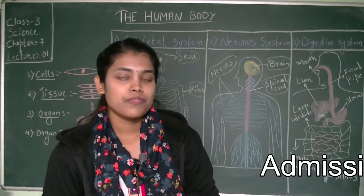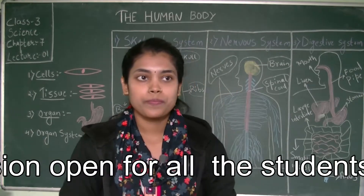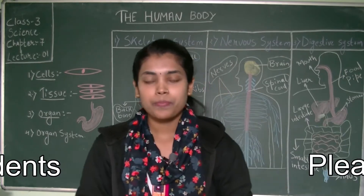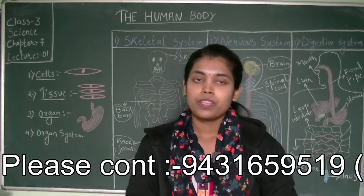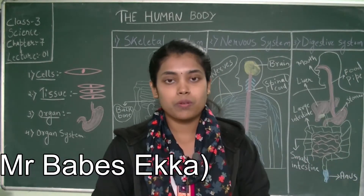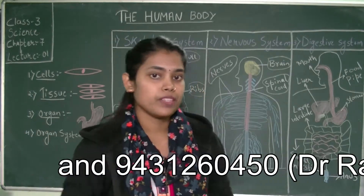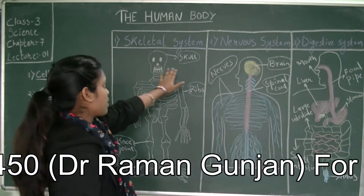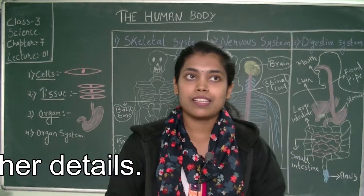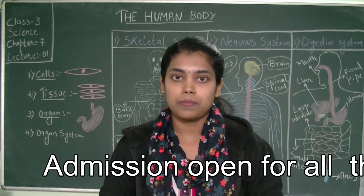The first thing you have to learn is what is the human body, what are the things which are done by the human body, what are the parts of the human body, and what are the functions the human body performs. We will also be covering the different types of organ systems, their functions, and lastly the posture, exercise, and rest topics in this chapter.